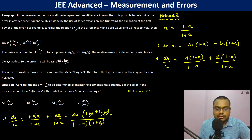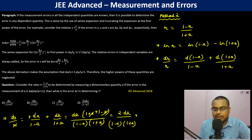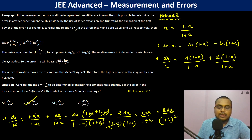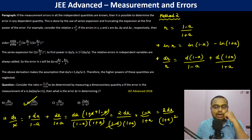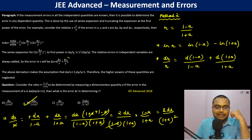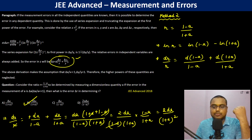So dR by R equals minus dA by (1 minus A), and again this becomes plus because errors are additive, plus dA by (1 plus A). Combining: this equals 2 dA by (1 minus A)(1 plus A). Multiplying by R, which is (1 minus A) by (1 plus A), the (1 minus A) terms cancel, giving the same result: 2 dA by (1 plus A) whole squared. This is Method 2, which is the recommended approach. Thank you very much.